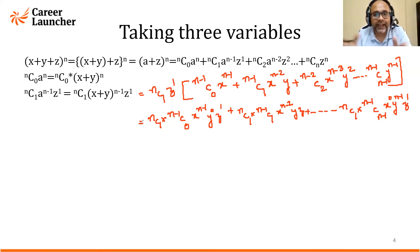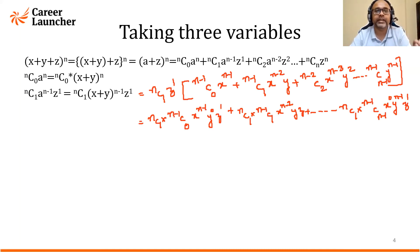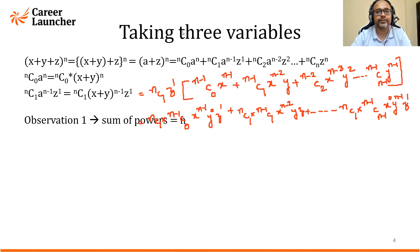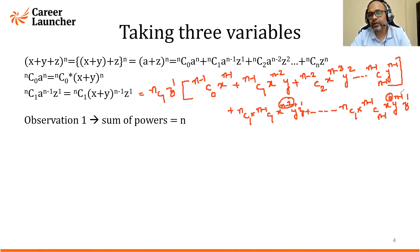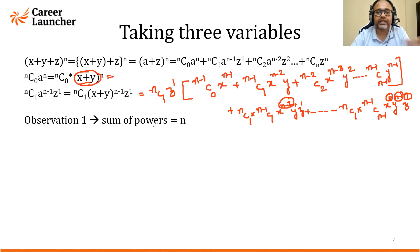This shows how long the entire expansion gets — and that is the reason the expansion itself is not very important. What matters is the observation of each term. The first key observation is: the sum of the powers is always equal to n. For example, x^(n-2)·y^1·z^1 adds to n, and x^0·y^(n-1)·z^1 also adds to n — just like in binomial theorem.